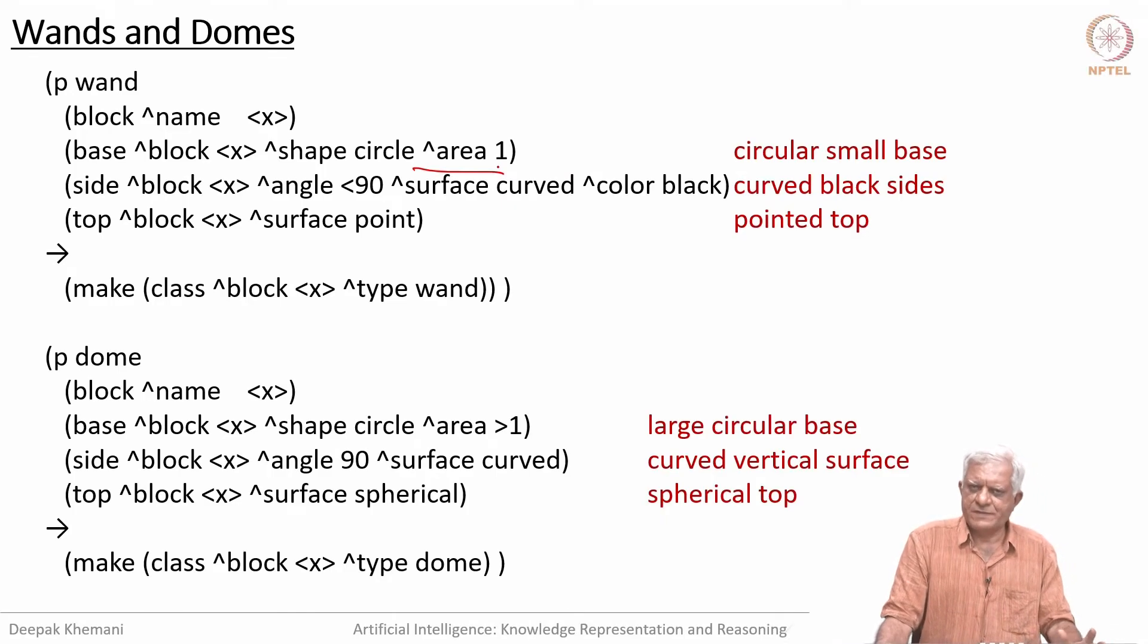Welcome back. We have been looking at the Rete net, a network which has two parts. The top part is the alpha network, which is used to match working memory elements, and the lower part is a beta network, which is used to pull together those patterns which constitute a rule essentially.